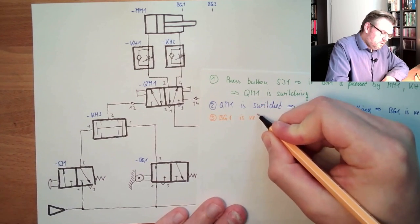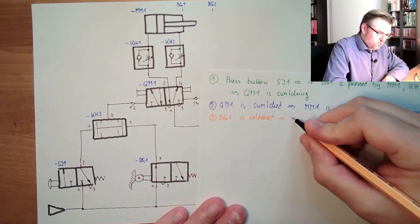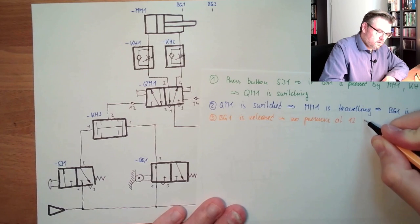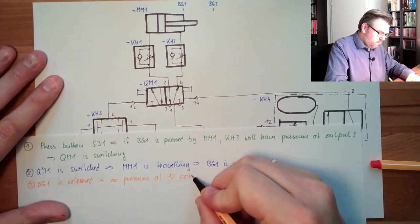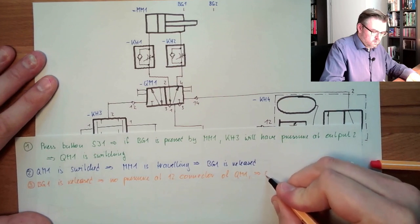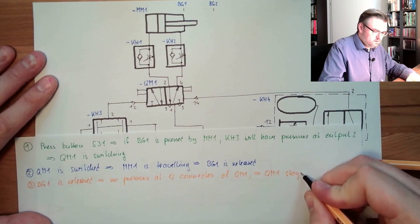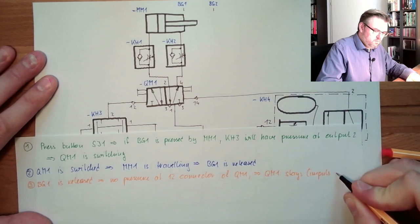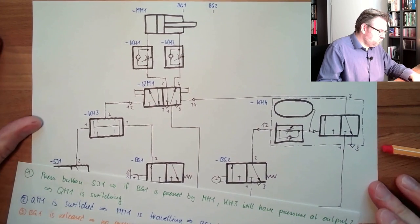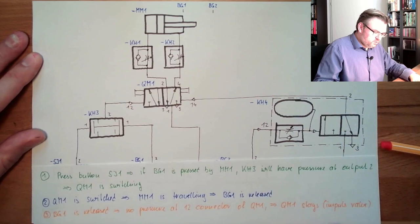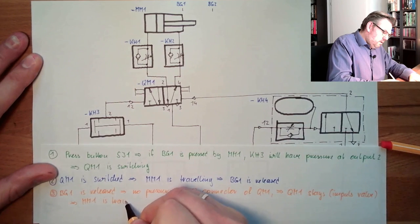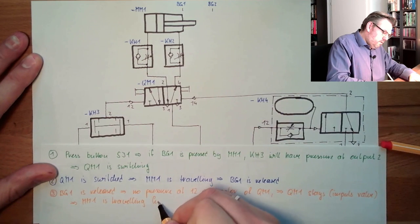This would cause BG1 no longer to be touched. So BG1 is released. If BG1 is released, I have here no pressure anymore. I have here no pressure. This will stay because it's an impulse valve. So this is actually the third thing which is happening. BG1 is released, no pressure at BG1 connector at one two connector of QM1.